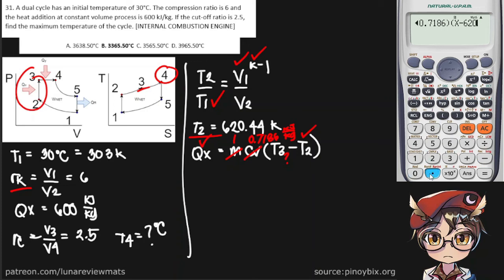And T2 is 620.44. And we get our T3 of 1455.4 Kelvin.